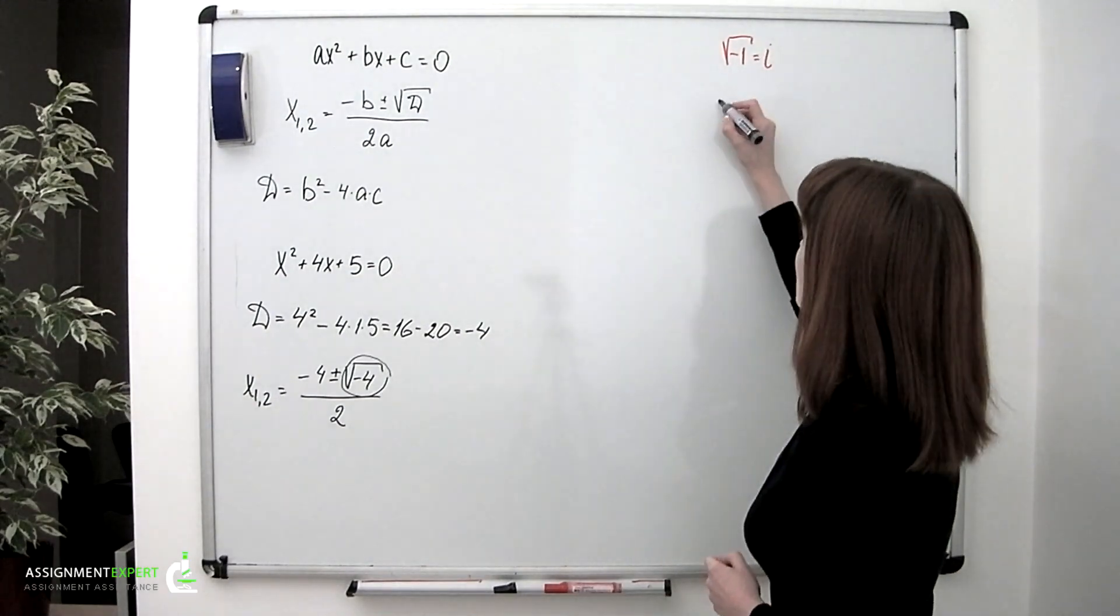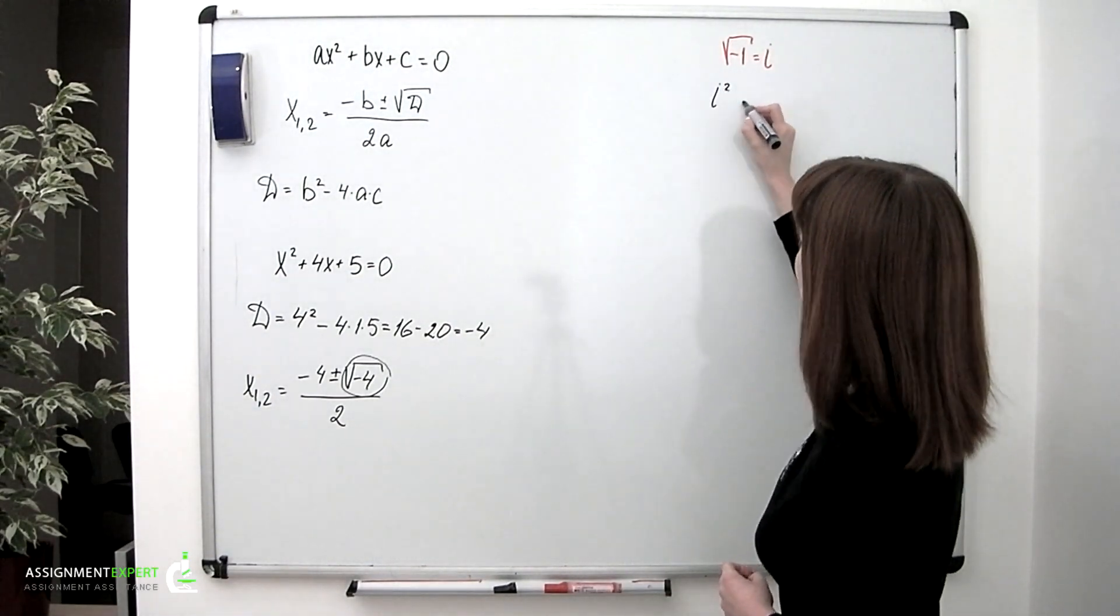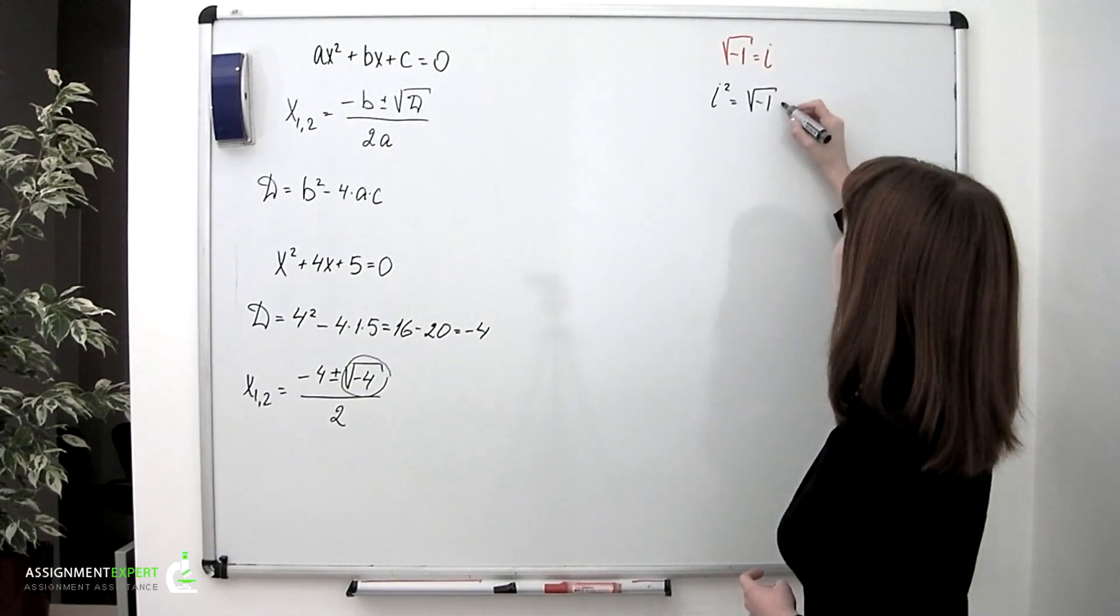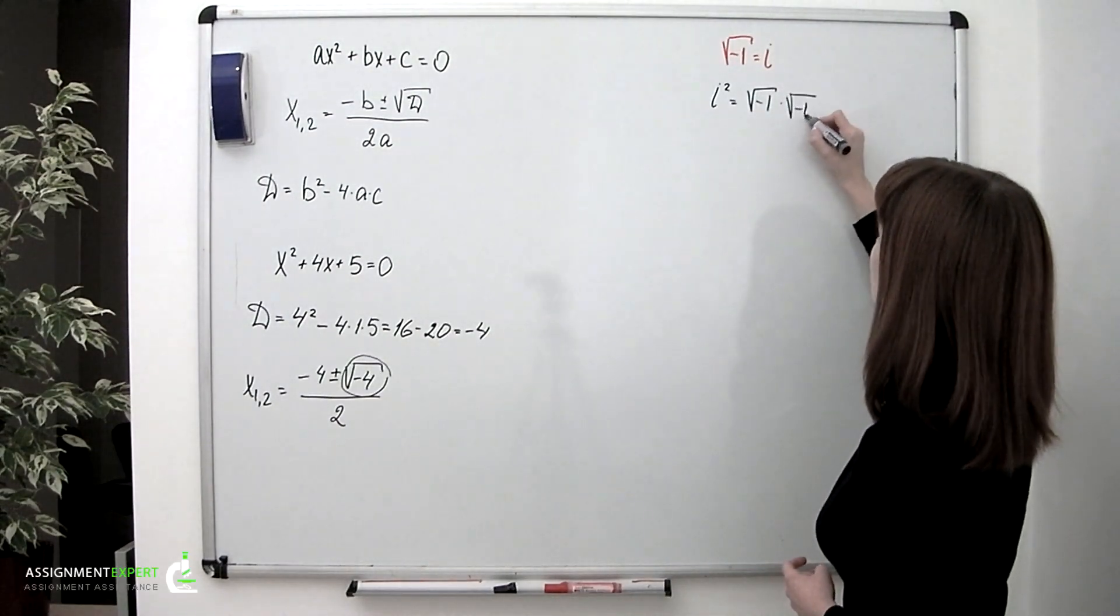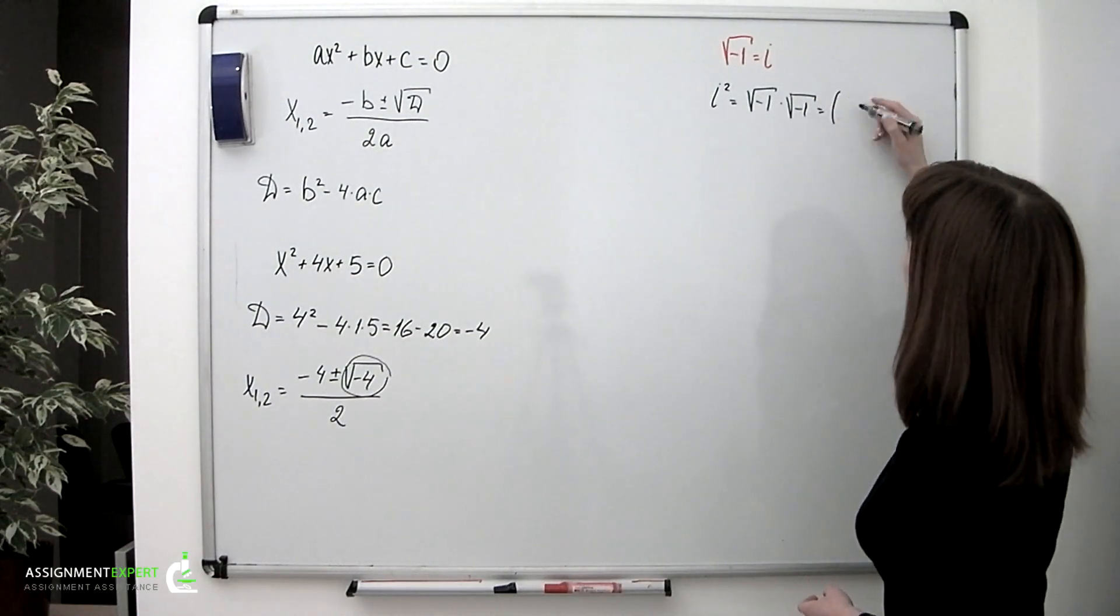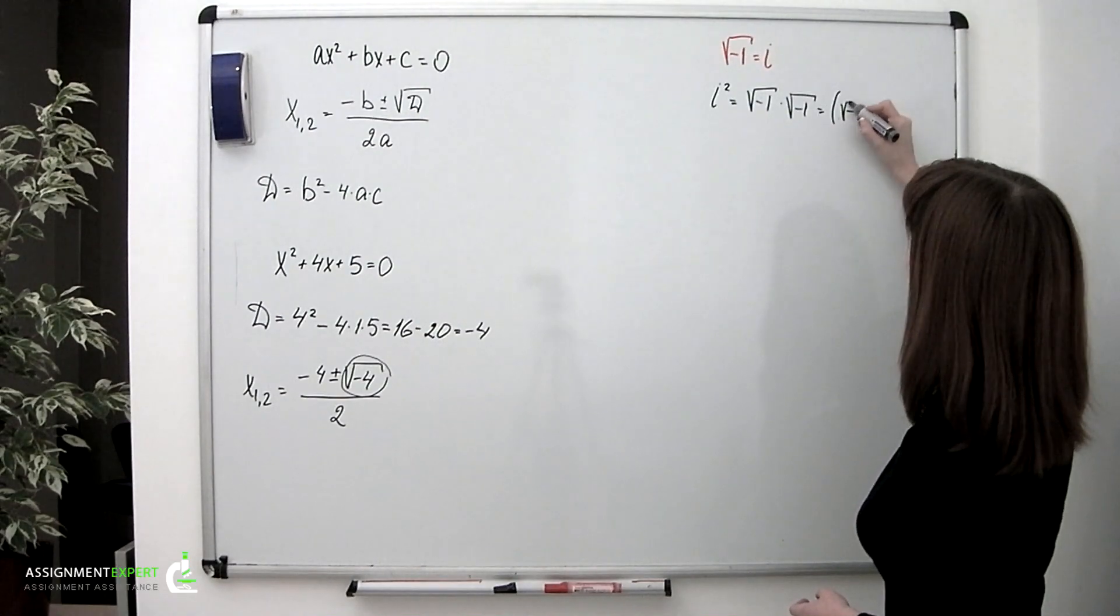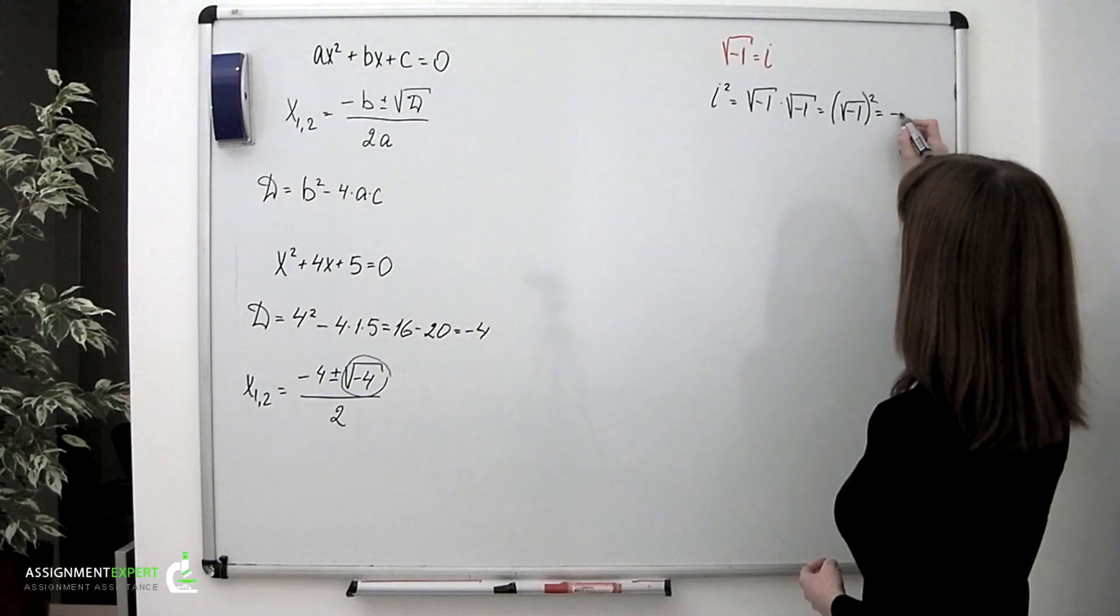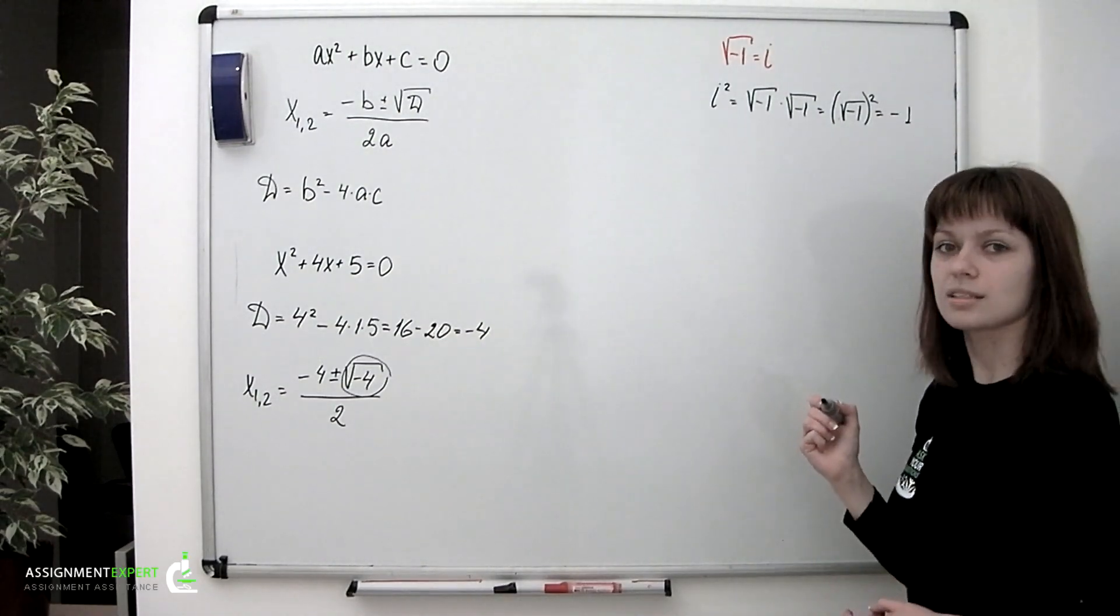Now let's consider i². So it seems that we should simply take square root of negative 1 multiplied by another one or raised to the second power and obtain -1.